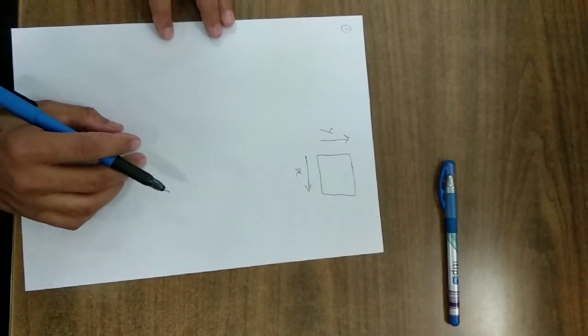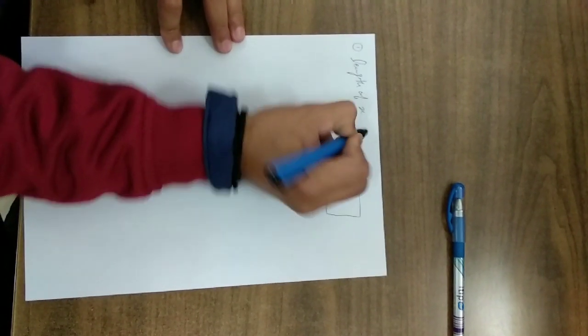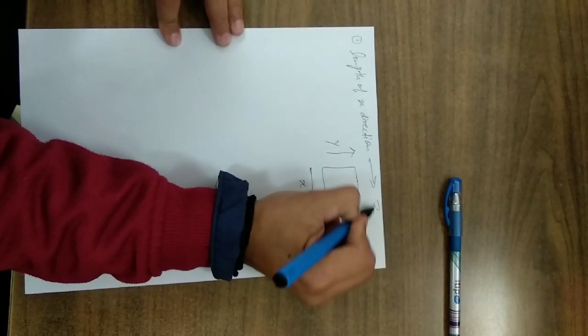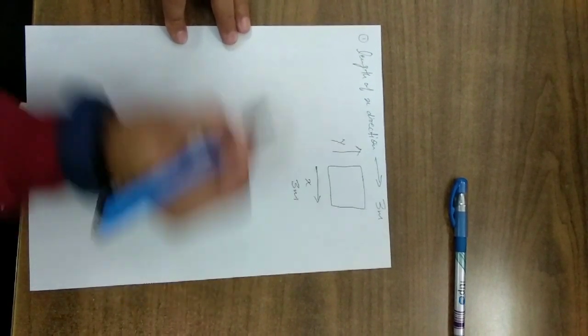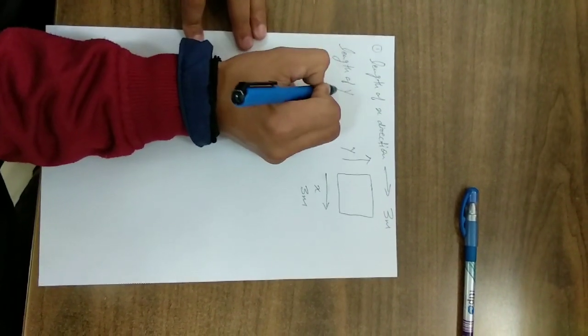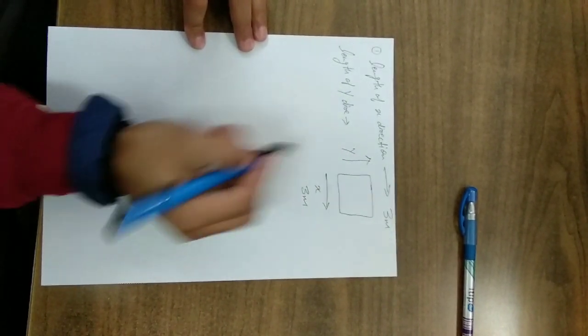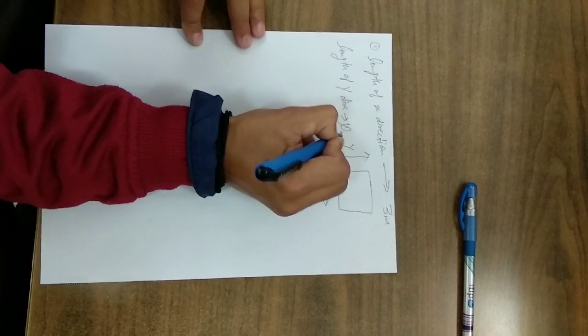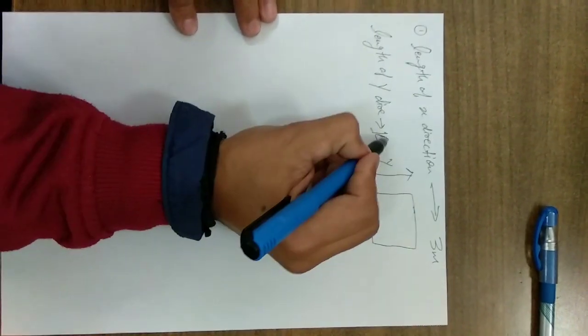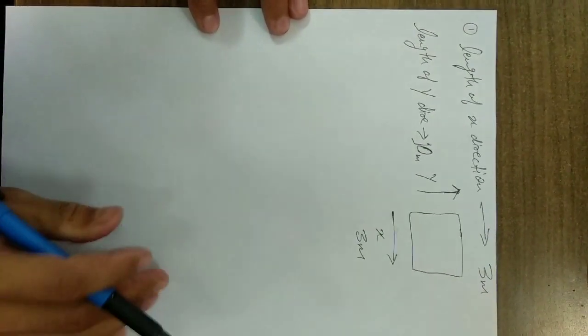The length of X direction is 3 meters. The length of Y direction is 10 meters. These directions are for example only, you can use more than these lengths.